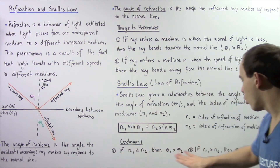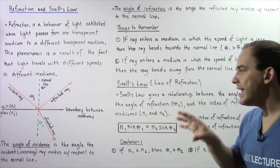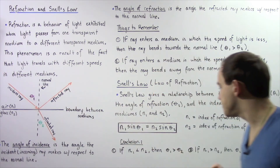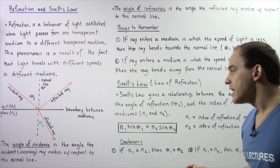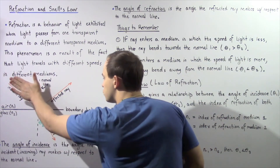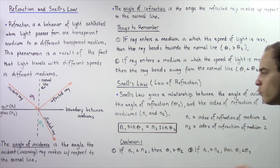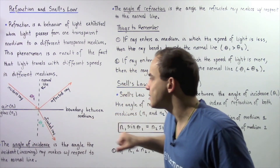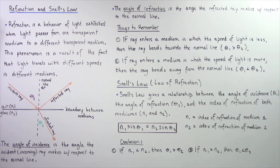From this equation, we can conclude the following two important points. Whenever the index of refraction of medium one is less than the index of refraction of medium two, the angle of incidence theta one will be greater than the angle of refraction theta two. On the other hand, if we examine a ray of light traveling from medium two into medium one, where N1 is now the index of refraction of glass and N2 is the index of refraction of air, then because N1 is greater than N2, theta one will be less than theta two.